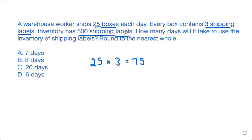So to figure out how many days it takes to use all of the 500 shipping labels, you take the total number of shipping labels, the 500 shipping labels, divided by the number of shipping labels that you use each day. And if you do 500 divided by 75, that is 6.666 repeating.